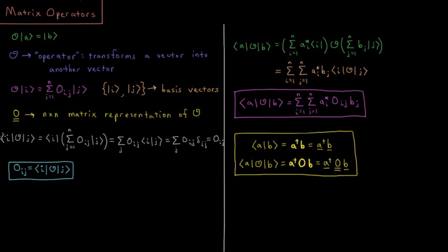So what is bra vector i, operator O, ket vector j? We're going to see what this ends up being.